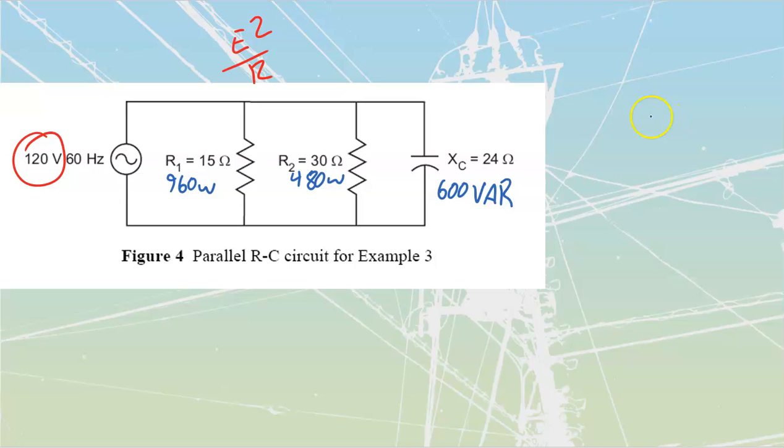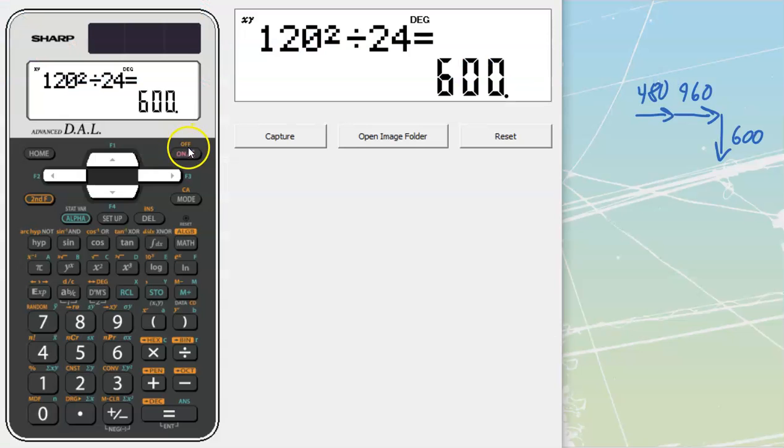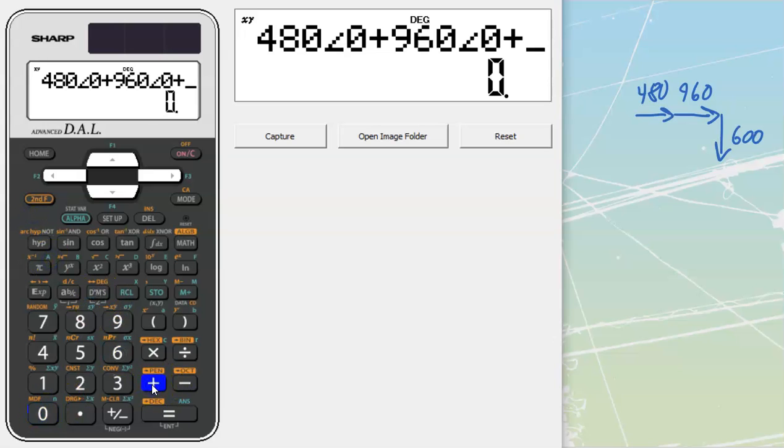Perfect. Now that we've got that, we're just going to go and add all of these together vectorially into a triangle that is going to give us power. Now you'll note that I'm drawing my vars downward now because that is the convention or the standard for capacitance that we are going to have. So let's go ahead and put those values in right now: 600 for this one, 960, 480 that we're going to have, and we'll add those all together.